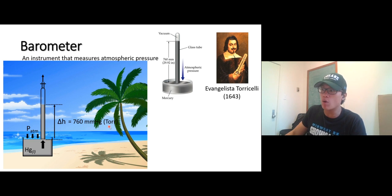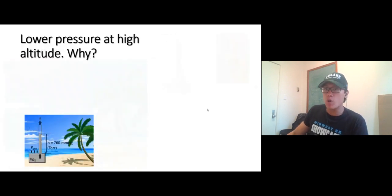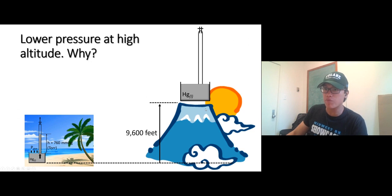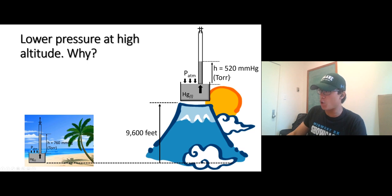Lower pressure at high altitude means less air on top of you. The height is going to be lower depending on how high you go up. At 9,600 feet, the height we find is only 520 millimeter mercury or 520 torr.